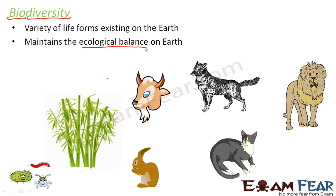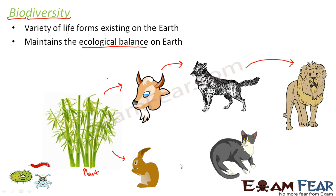Let us look at this example. These plants are eaten by animals like goat. Goat feeds on plants and is completely dependent on them for survival. Similarly, these goats are again eaten by animals like jackal — animals which feed on flesh. These jackals in turn are again eaten by animals like lion. Also, rabbit feeds on plants, this rabbit can be eaten by a wild cat, and this wild cat can again be eaten by the lion.